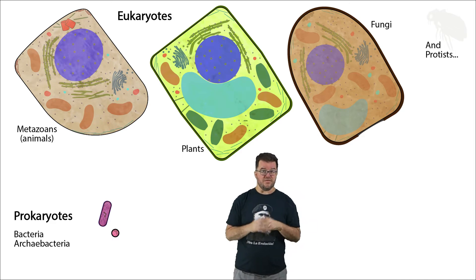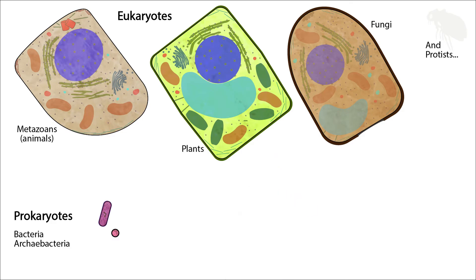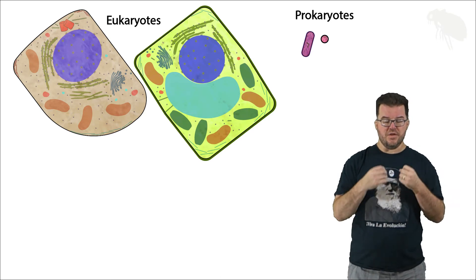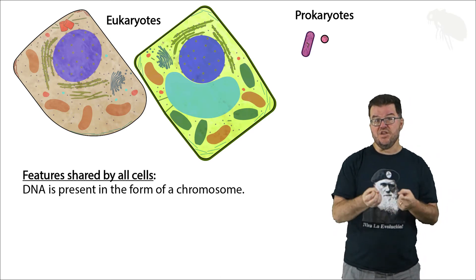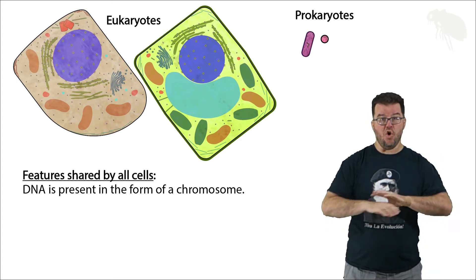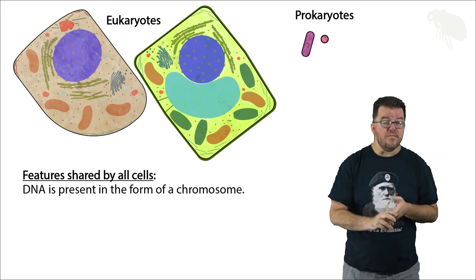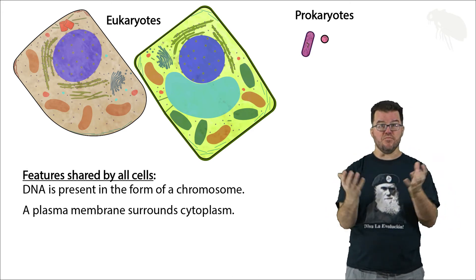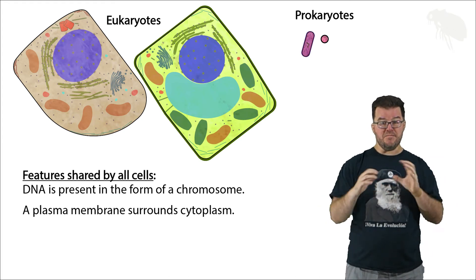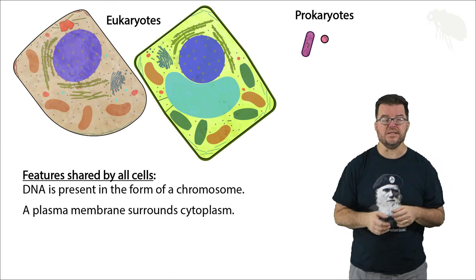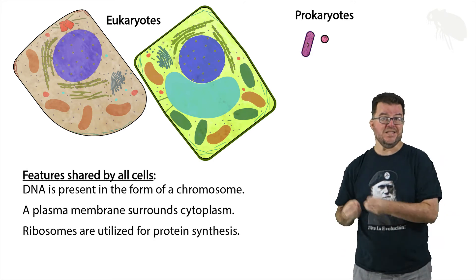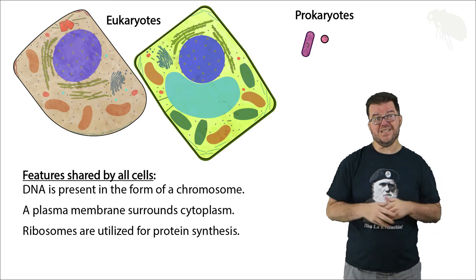Let's focus on what prokaryotes and eukaryotes have in common. First of all, they all have DNA in the form of a chromosome — all of them have at least one chromosome composed of DNA. All of them are formed with a plasma membrane that surrounds cytoplasm, a fluid matrix that includes basically everything in the cell. And finally, they all use organelles called ribosomes to carry out protein synthesis so they can build the proteins they need to stay alive.